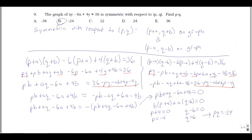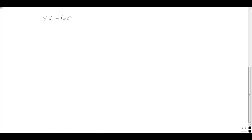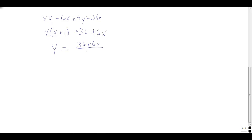Let me also show a slicker approach. We have xy minus 6x plus 4y equals 36. You can solve this for y: factor out y to get y times (x plus 4), move the 6x term, and get y equals (36 plus 6x) divided by (x plus 4), which equals 6 times (x plus 6) divided by (x plus 4). So y is a nice function of x.